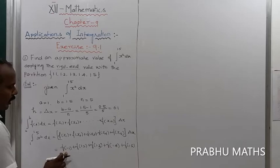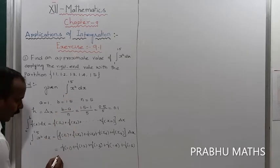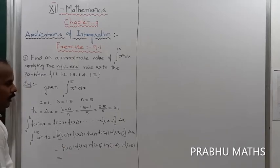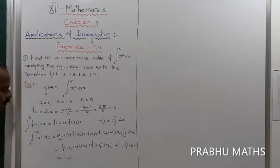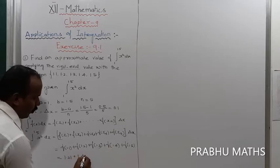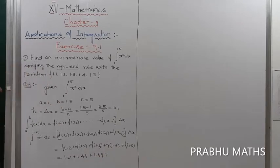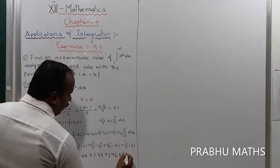Now f of x equals x square, so squaring: 1.1 squared equals 1.21, plus f of 1.2 equals 1.44, plus f of 1.3 equals 1.69, plus f of 1.4 equals 1.96, plus f of 1.5 equals 2.25.